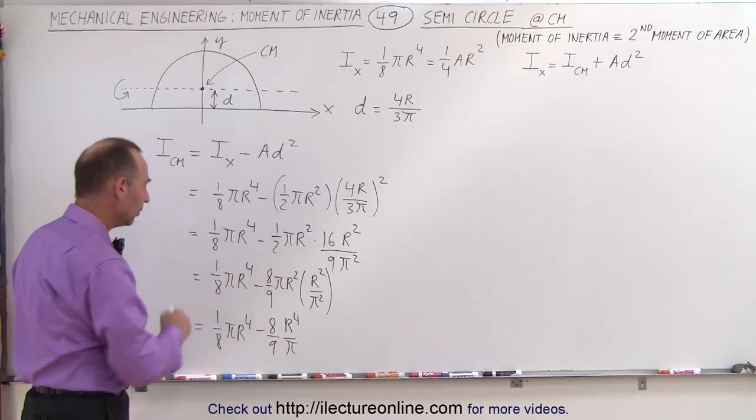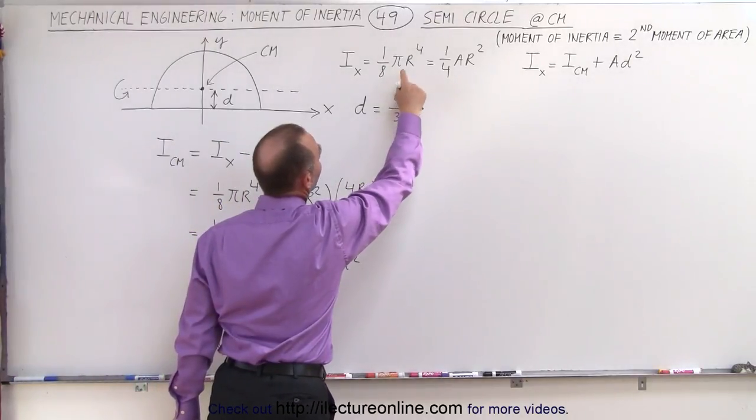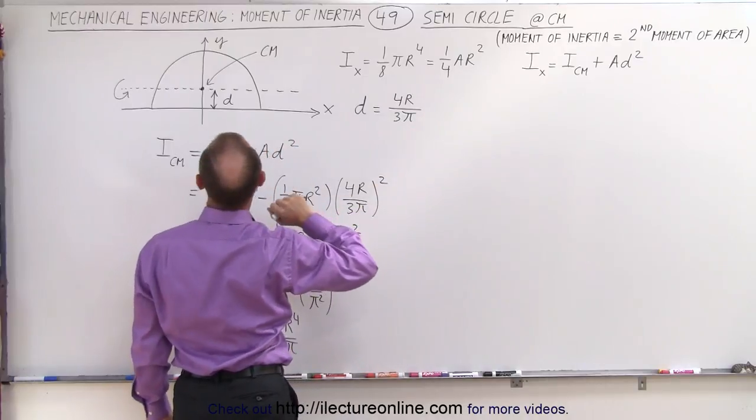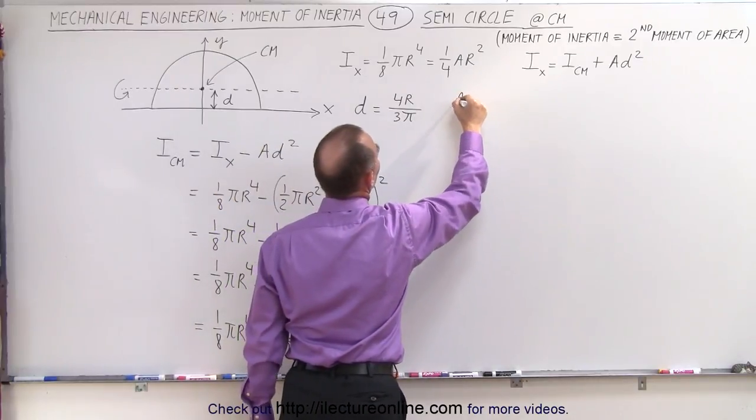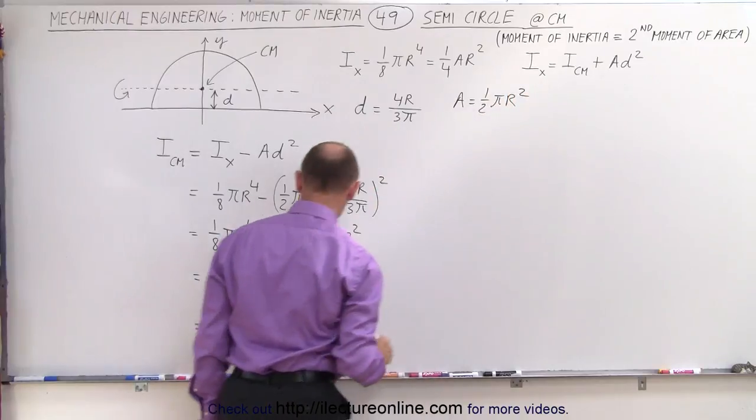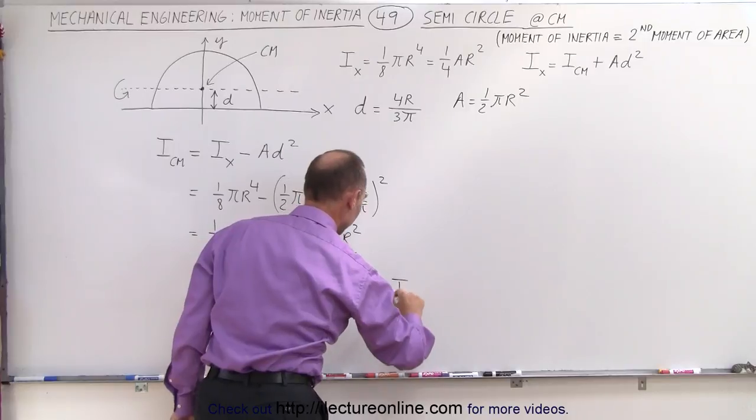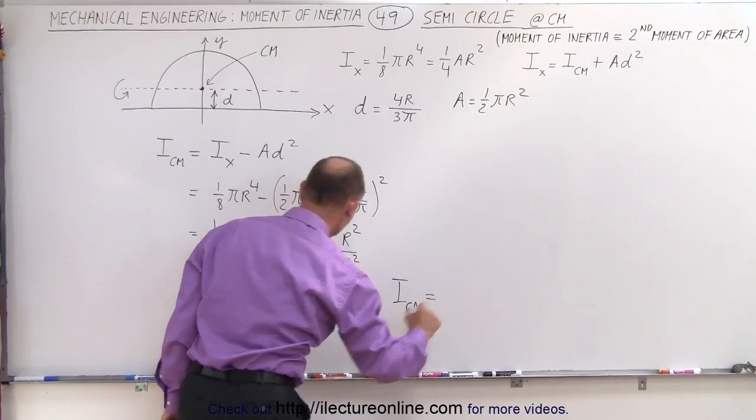Or if we want to pull out an area, which is equal to 1 quarter, the area of the semicircle is equal to 1 half pi r squared. If I factor out a pi r squared, I can then say that the moment of inertia about the center mass is equal to, so I'm going to pull out a 1 half pi r squared.